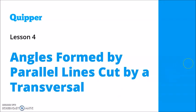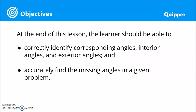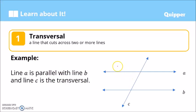In this video, we are going to talk about angles formed by parallel lines cut by a transversal. At the end of this video, the learner should be able to correctly identify corresponding angles, interior angles, and exterior angles, and accurately find the missing angles in a given problem. So what is a transversal? A transversal is a line that cuts across two or more lines.